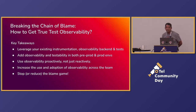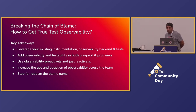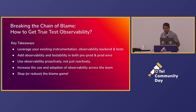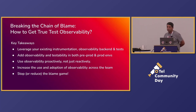Key takeaways: leverage your existing instrumentation, observability backend, and tests — you don't have to change out anything or everything. Add observability and testability in both pre-prod and prod environments. Use observability proactively, not just reactively — I think that's a big thing. The use case has always been: things break, we're gonna use observability. This changes that paradigm.